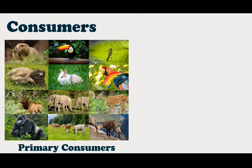Primary consumers are purely herbivore animals that are dependent for their food on producers or green plants. Examples include insects, rodents, rabbit, deer, cow, buffalo and goat, which are common herbivores in a terrestrial ecosystem. In aquatic ecosystems, crustaceans and mollusks are the herbivores. Elton named the herbivores of an ecosystem as 'key industry animals.' The herbivores serve as the chief food source for carnivores.